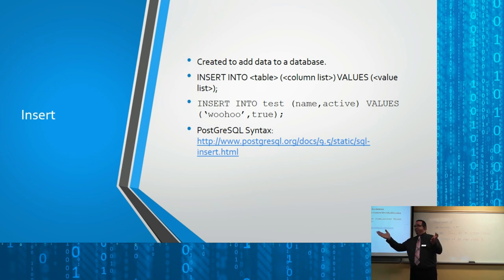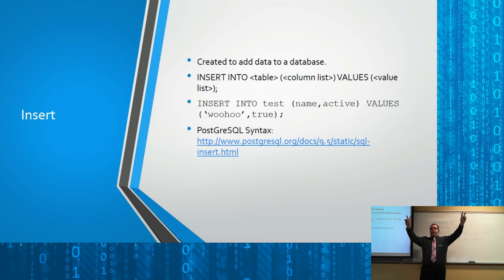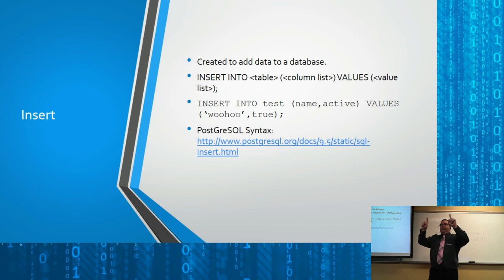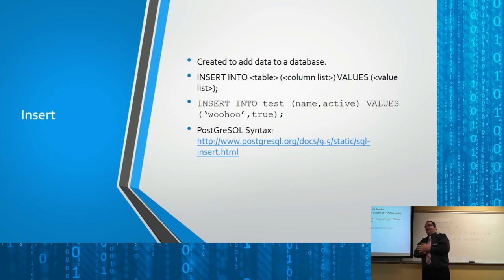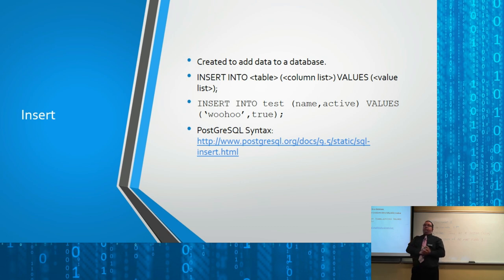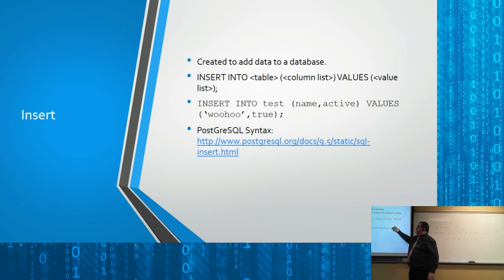Strings and dates are quoted because they can have spaces, and you need to identify where the string starts and ends — similar to how Java uses double quotes. In SQL, the standard is single quotes everywhere. Most servers will accept double quotes, but PostgreSQL uses single quotes only. Double quotes mean something else in PostgreSQL — if you try to use double quotes you'll get a weird message about an unknown object. Get used to using single quotes; they work on all database servers.